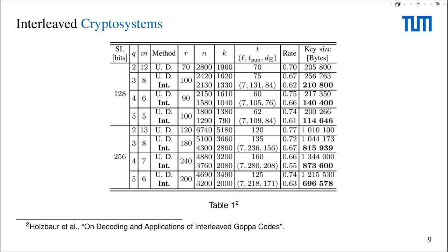This is a table from a paper that looks at what kind of key reductions we can get by using interleaved cryptosystems. If you look at the rightmost column, you can see the different key sizes achieved by interleaved and non-interleaved approaches. The key sizes achieved using interleaving are in bold, and the reductions are very significant — from about 20 to even 40%. So assuming interleaved cryptosystems are secure, they provide a very good way of reducing the key size of the McEliece system.